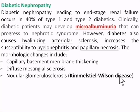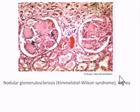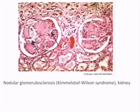The morphological changes under the microscope include capillary basement membrane thickening, diffuse sclerosis of the mesangium, and nodular glomerulosclerosis, which is called Kimmelstiel-Wilson disease. This slide shows diabetic nephropathy — you can see the glomeruli with sclerotic nodules, the Kimmelstiel-Wilson lesion, which is characteristic for patients with diabetic nephropathy.